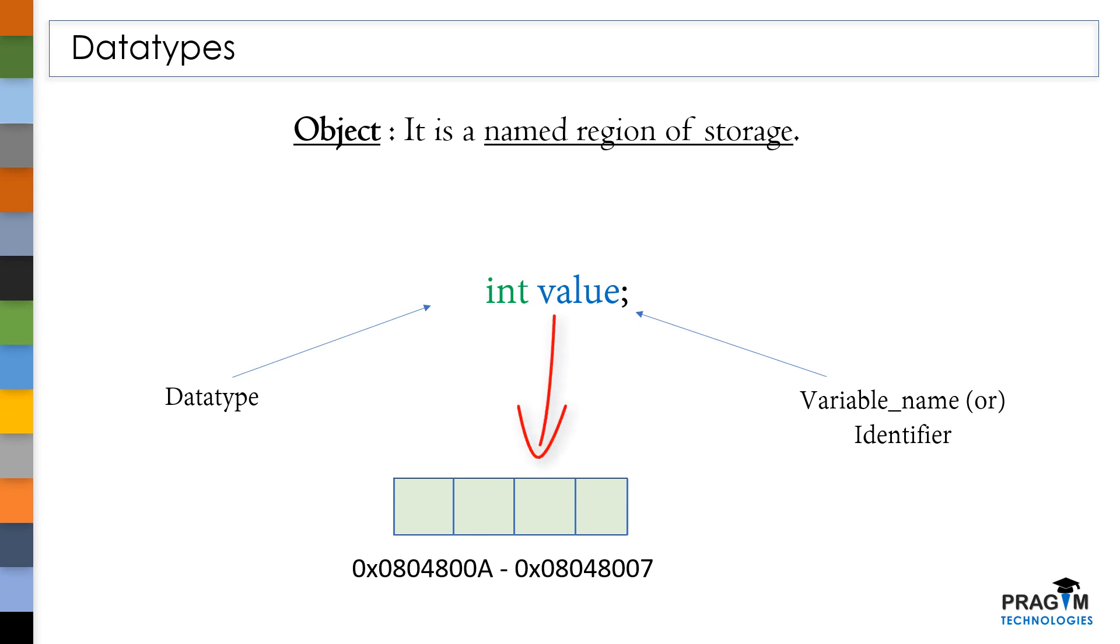If you clearly observe here, we can able to access these 4 bytes of memory using this variable name. We can call these 4 bytes as a named region of storage means we can able to access this region of storage using a name which is nothing but an object.